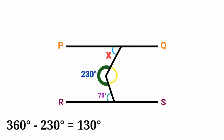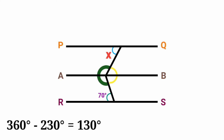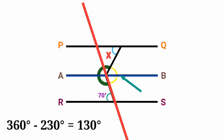Now, to relate these angles, we draw another parallel line — a line that is parallel to both PQ and RS. Let's label it line AB. This means line AB is parallel to line RS and also parallel to line PQ. This line AB intersects the transversal at a point between the two parallel lines.